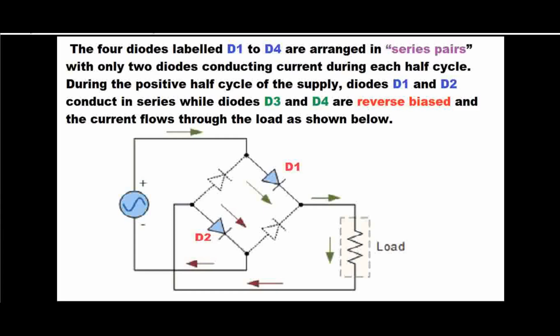During the positive half cycle of the supply, diode one and diode two conduct electricity in series, while diode three and diode four are reverse biased and therefore do not conduct current. Current will flow in this direction — it will pass through diode one, go through our load, go through diode two, and back to our AC supply. So diode one and diode two are forward biased and therefore conduct our current.